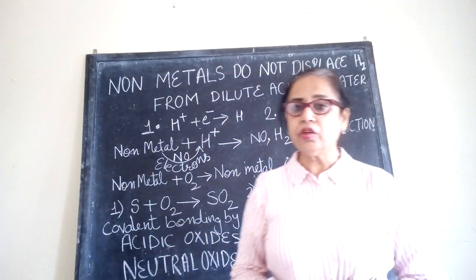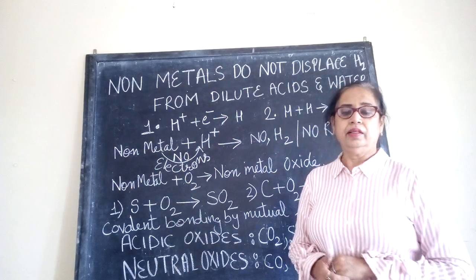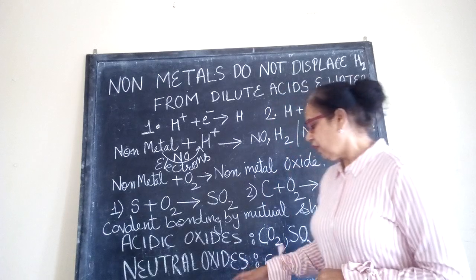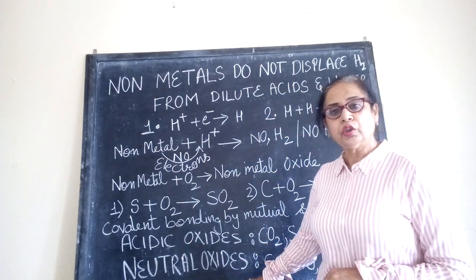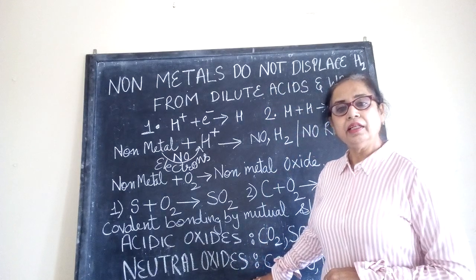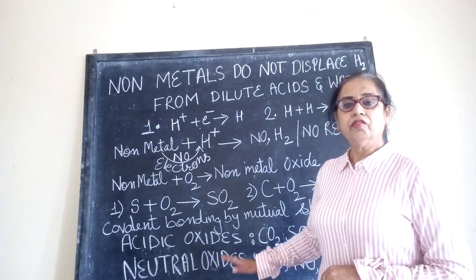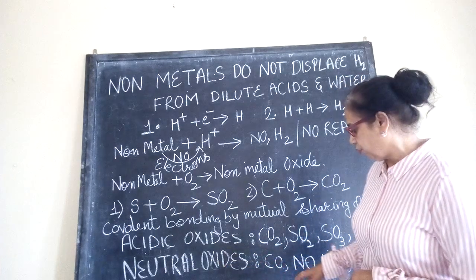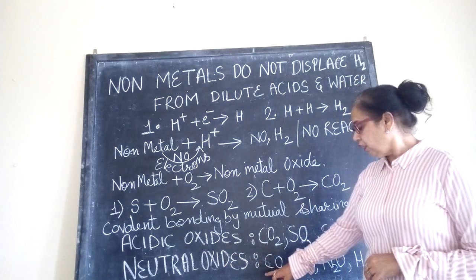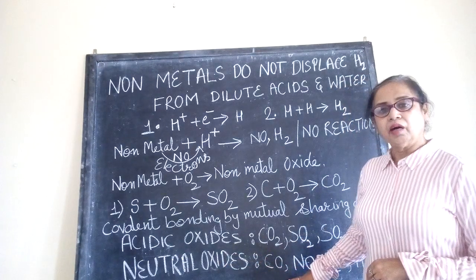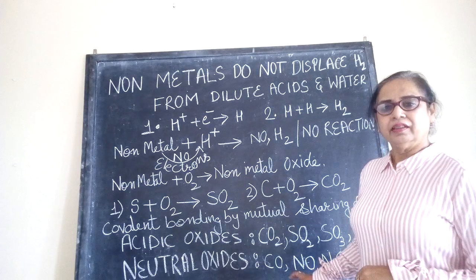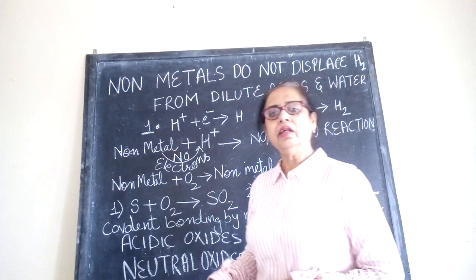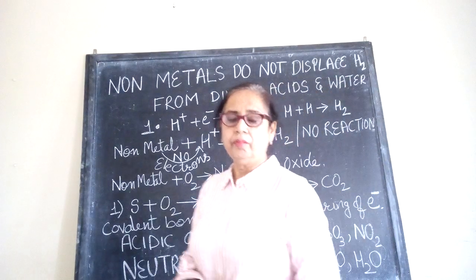What are these neutral oxides? They are neither basic nor acidic and do not show any change whether we use blue litmus or red litmus. Examples of neutral oxides are carbon monoxide, nitrous oxide, water, etc.